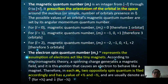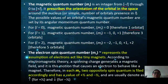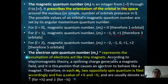For l equals 1, the magnetic quantum number can be minus 1, 0, and plus 1, so there are three orbitals in l equals 1. For l equals 2, the magnetic quantum number can be minus 2, minus 1, 0, plus 1, and plus 2, therefore there are five orbitals in l equals 2.